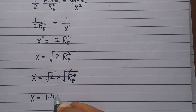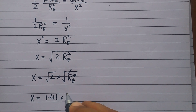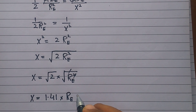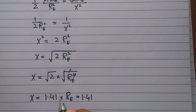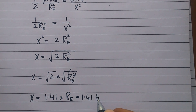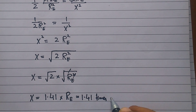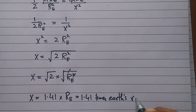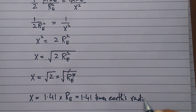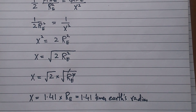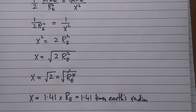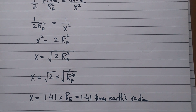Root 2 is equal to 1.41, so x equals 1.41 times R_E, which is the Earth's radius. This is our answer, which matches the book.